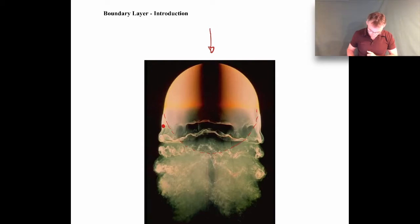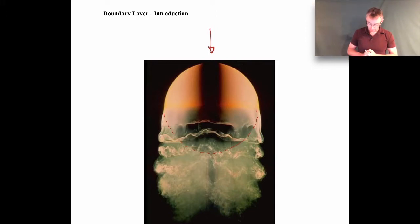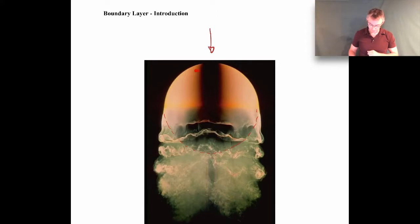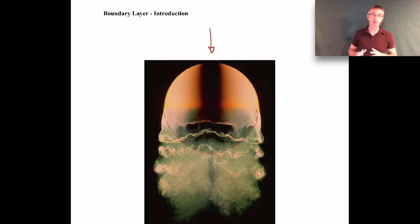Behind the separation point, you get the formation of what's known as a wake region, where the flow is quite complicated. Our discussion over the next couple of lectures is really going to focus on this idea of a boundary layer — a thin layer of fluid adjacent to the surface — and how that affects the drag forces on an object.